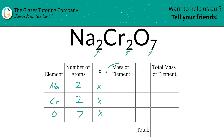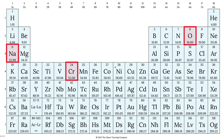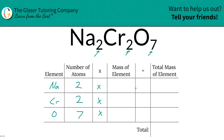Then we're simply going to multiply those number of atoms by the mass of each element. These masses are always found on the periodic table, so let's take a look. Sodium's mass is 22.99, chromium is 52, and oxygen is 16. So that's what we're going to write down: 22.99, 52 for chromium, and 16 for oxygen.